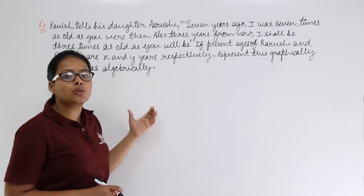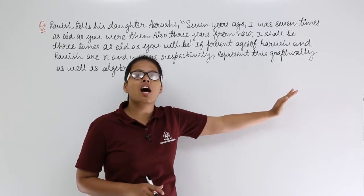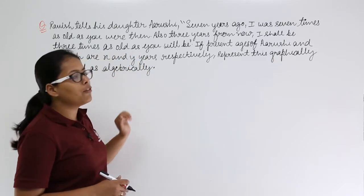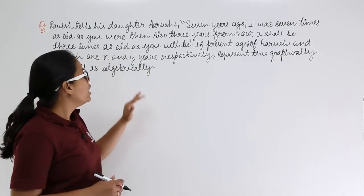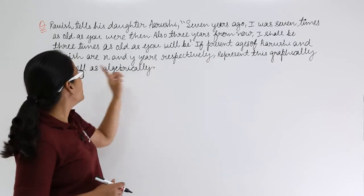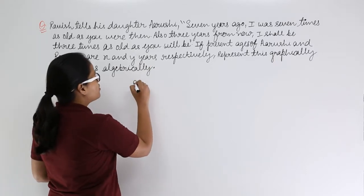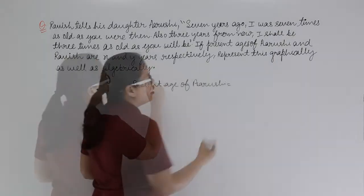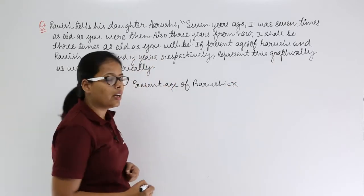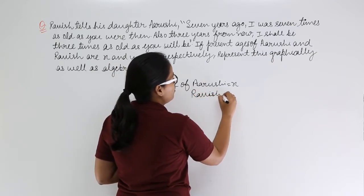Algebraically means you need to represent this in equation form, and then after that you need to draw the graph for that equation. Now, the information given to you is that the present age of Arushi is x and the present age of Ravish is y.